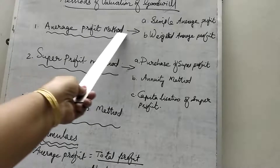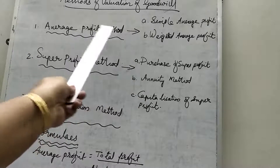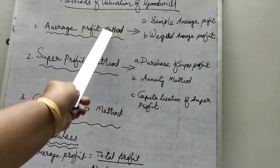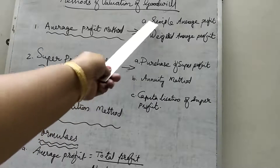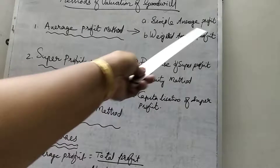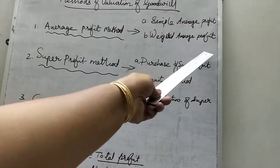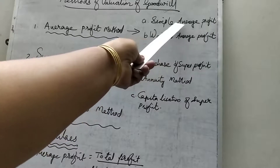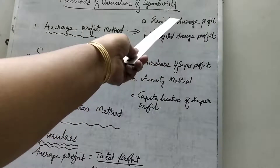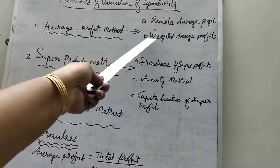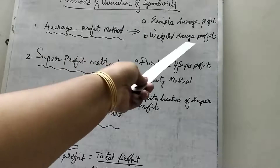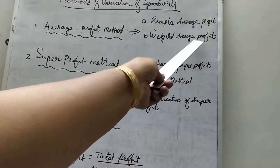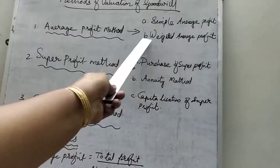The first one is the average profit method. Under the average profit method, there are two methods which can be followed: the simple average profit method or the weighted average profit method. Under the simple average method, we find out the simple average and then find out the goodwill. Under the weighted average method, we find out the weighted average profit and then find out the goodwill.